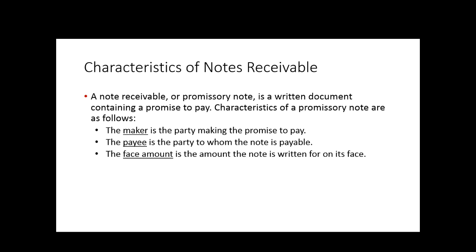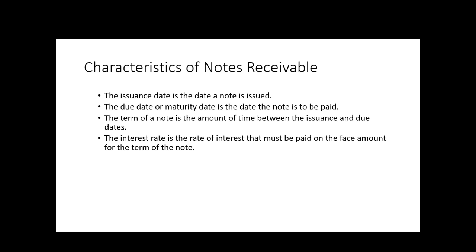The maker is the party who's going to make the promise to pay. The payee is the person who's going to get paid. The face amount is the amount the note is written for. The issuance date is the date the note is issued. The due date or maturity date is the date it has to be paid back. The term of the note is the difference between the issuance date and the maturity date - could be 30, 60, 90 days, or even years. The interest rate is the rate at which you're going to be computing interest on the face amount of the note.